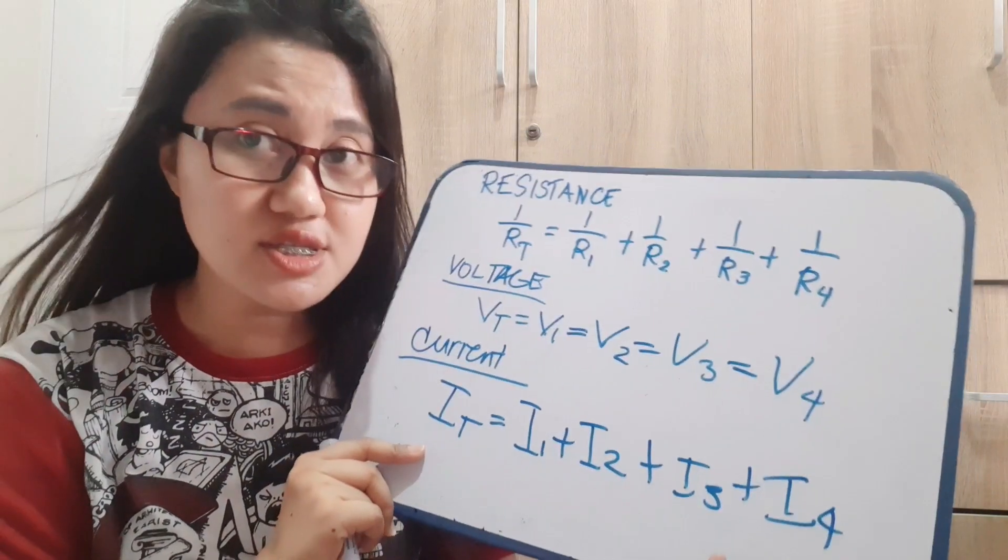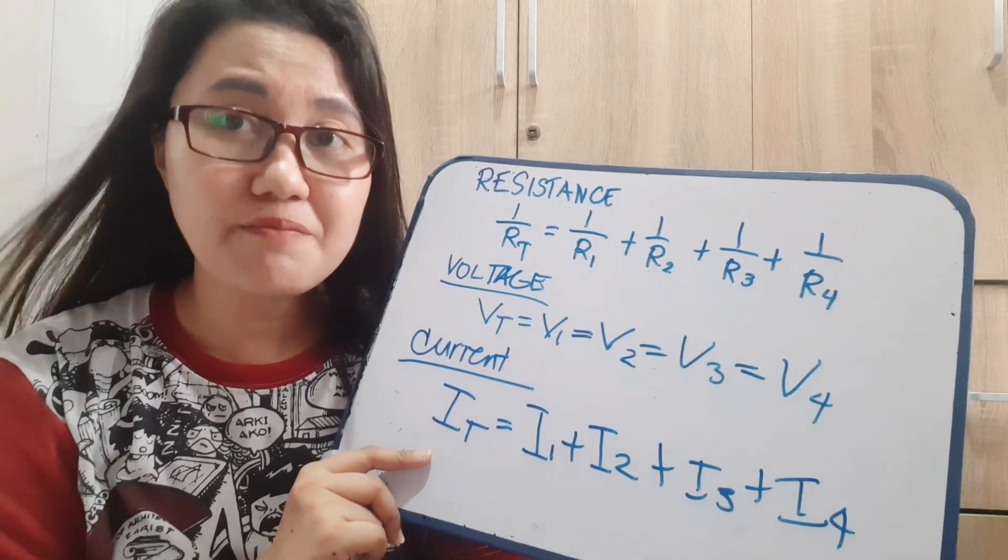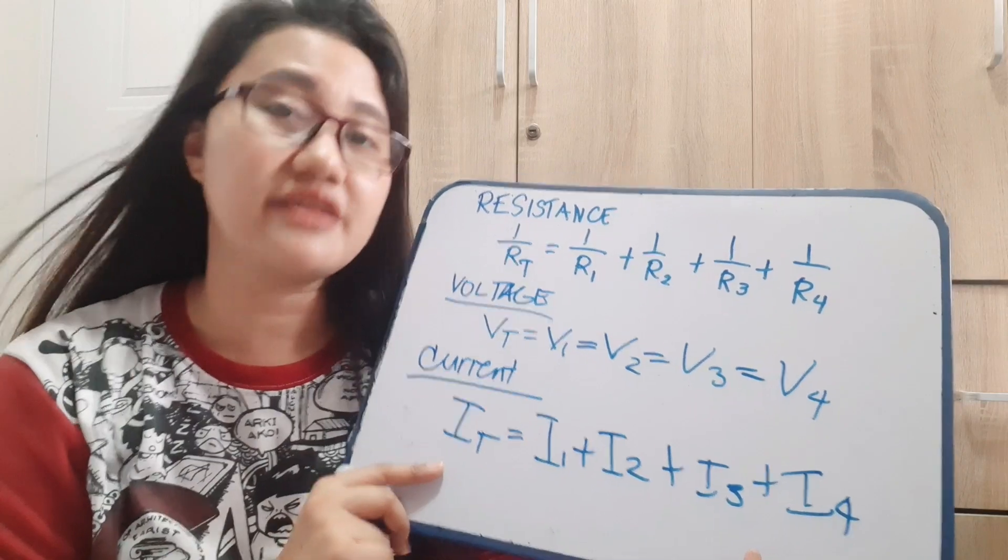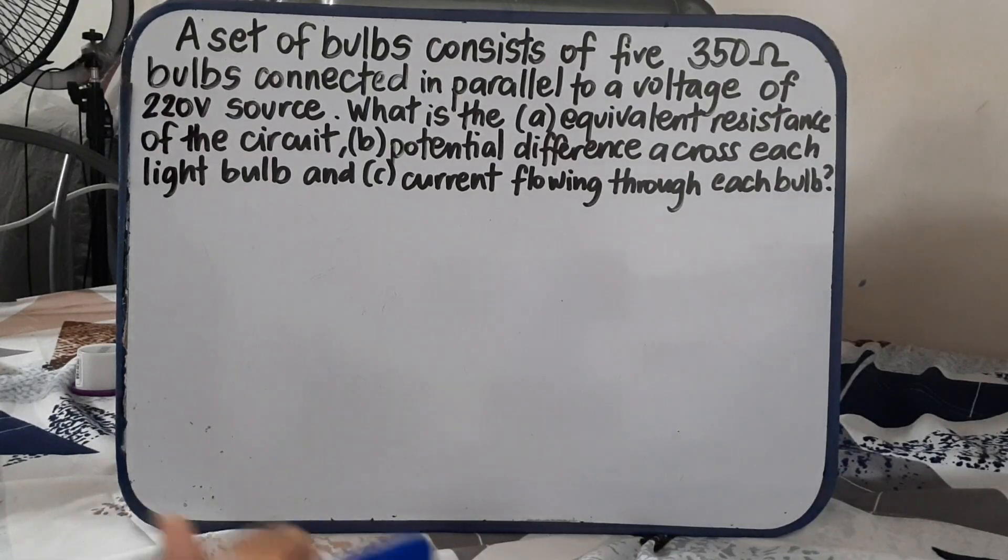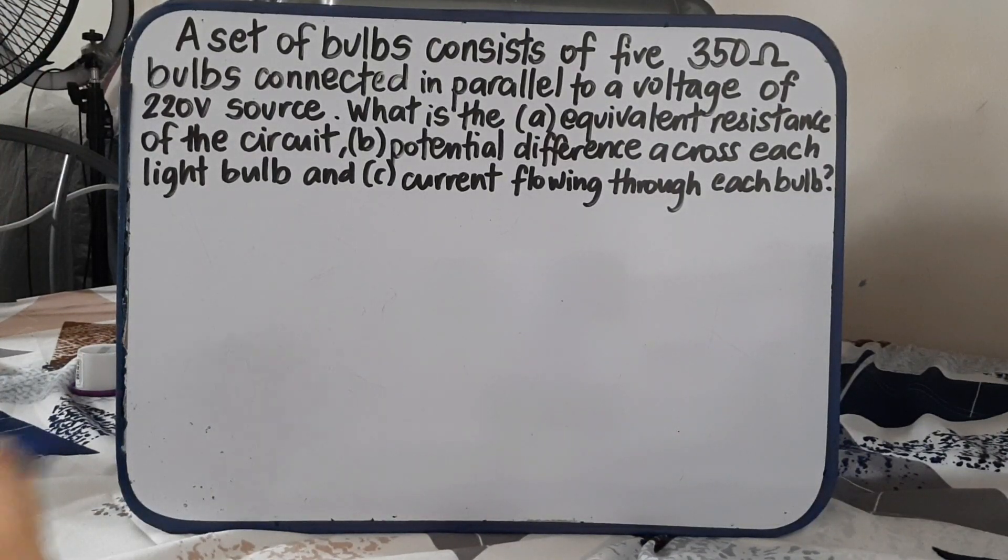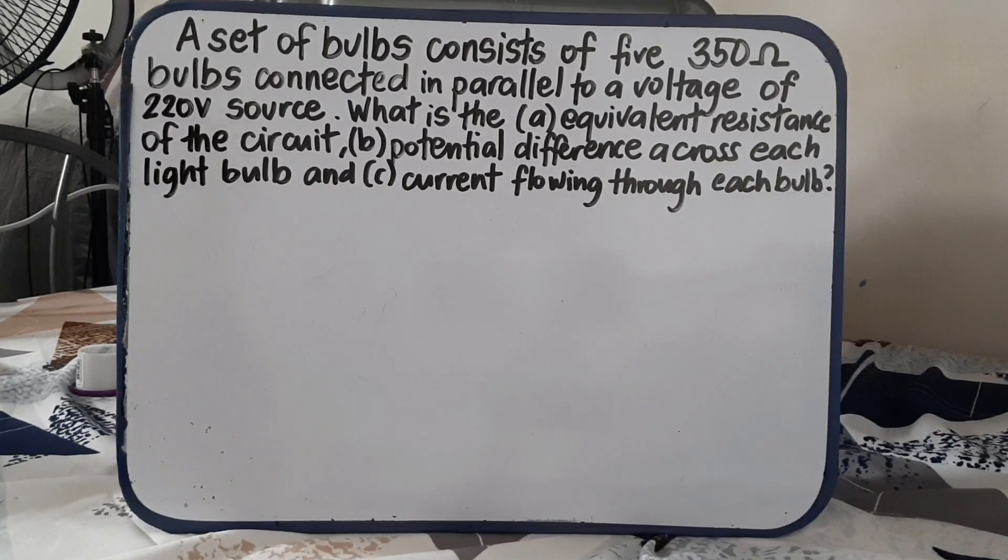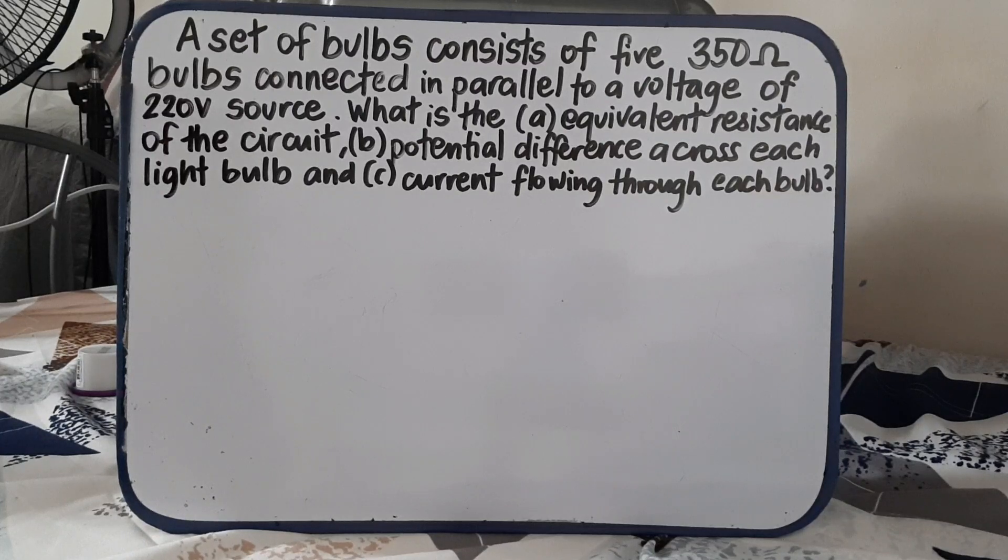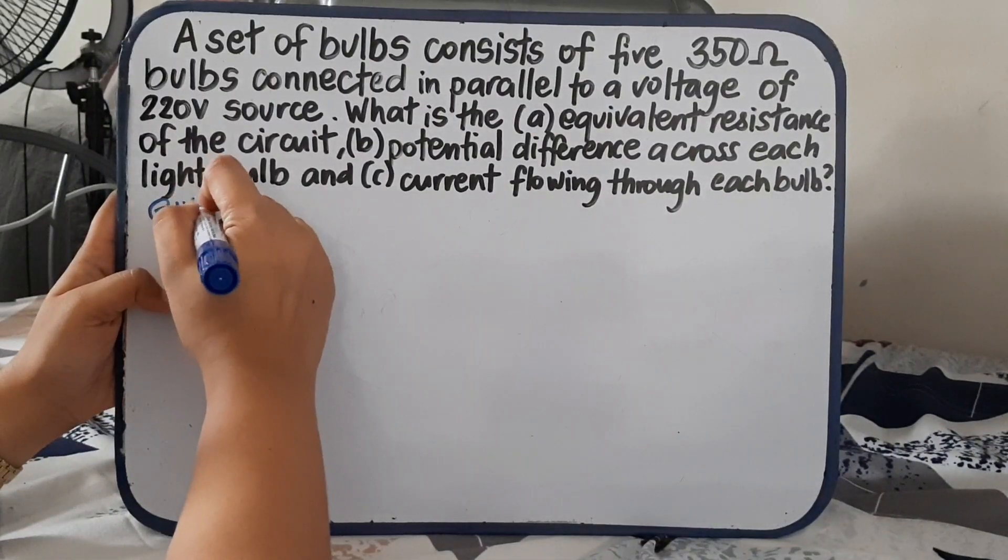These are the 3 important rules to consider in computing or solving for the parallel circuit. Now, let's move on with the problem solving. Let us solve problem number 1 about parallel circuit. A set of bulbs consists of 5, 350 ohms bulbs connected in parallel to a voltage of 220 volts source. What is the equivalent resistance of the circuit, potential difference across each light bulb, and current flowing through each bulb? So first, we are going to use the GRESA method to answer this problem.